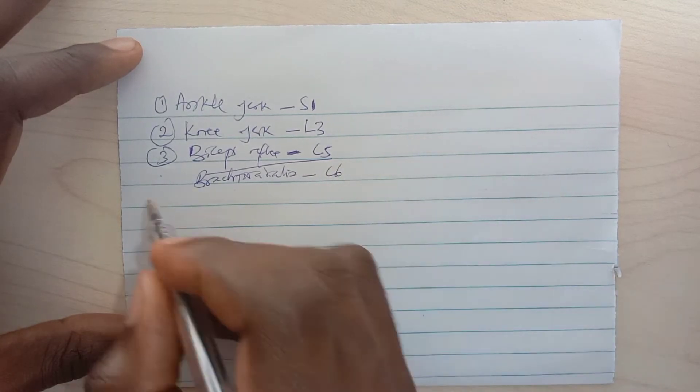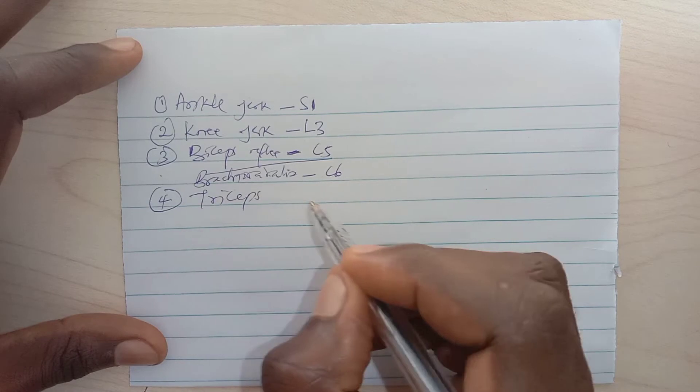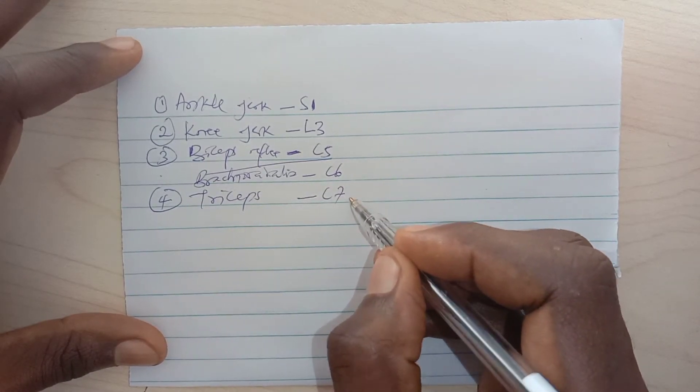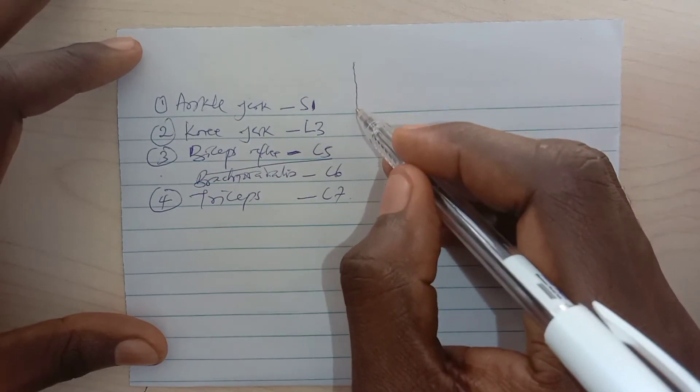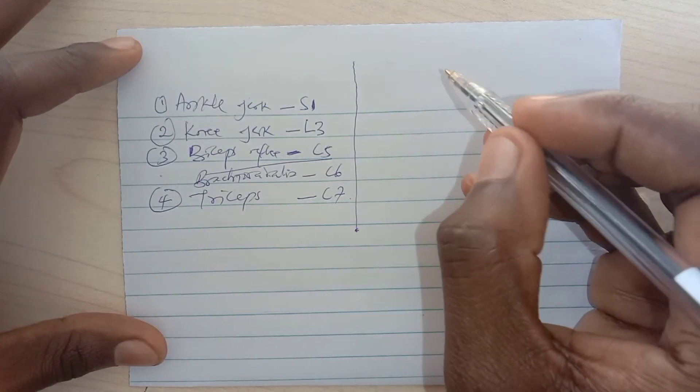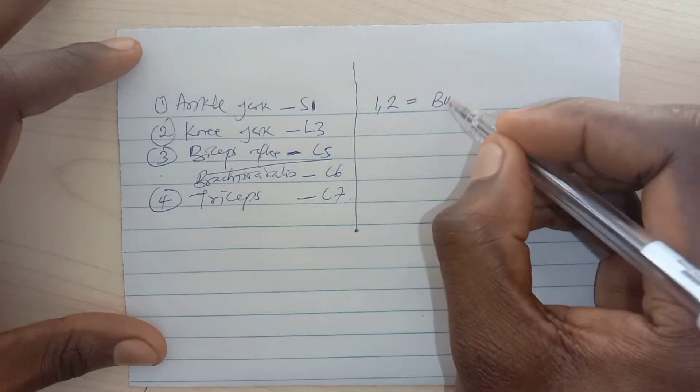which is C6, and then lastly the triceps which is mainly C7. How do you remember all of this? Use a rhyme or a song. So, one-two: buckle your shoe.